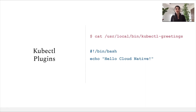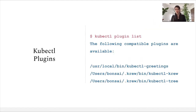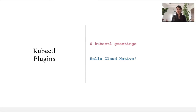Let's look at how a kubectl plugin could be written. Here I have an extremely simple shell script which is going to have an echo command. The location of the file should be in one of the binary folders defined in the PATH environment variable — in this example, under /usr/local/bin. The file name for a plugin should always be prefixed by 'kubectl' followed by the actual command. So here we create a greetings plugin and the file name is kubectl-greetings. Once the file is in the right path with the right naming, it will be automatically identified by kubectl, and we can validate that by doing a plugin list. To test that our plugin is working, it's just enough to do kubectl greetings, which will execute the shell script and print our echo command.